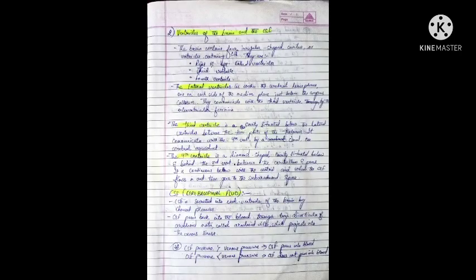There are mainly four ventricles present in the brain: the left and right lateral ventricles, the third ventricle, and the fourth ventricle. The lateral ventricles lie within the cerebral hemispheres, one on each side of the median plane just below the corpus callosum. Lateral means on the side, so these are present on two sides of the cerebral hemisphere.